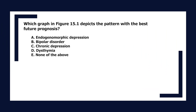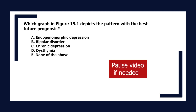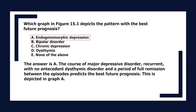Which graph depicts the pattern with the best future prognosis? A. Endogenomorphic depression, B. Bipolar disorder, C. Chronic depression, D. Dysthymia, E. None of the above. The answer is A. The course of major depressive disorder, recurrent, with no antecedent dysthymic disorder, and a period of full remission between episodes predicts the best future prognosis, depicted in graph A.